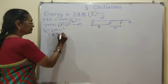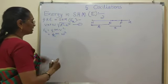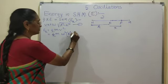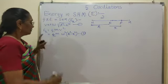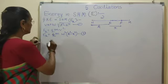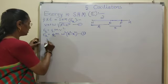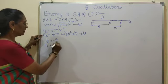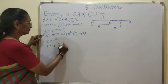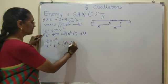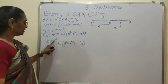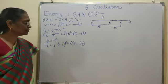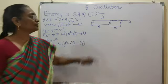Substituting for the velocity, V squared equals omega squared times (A squared minus X squared). So EK equals half M omega squared (A squared minus X squared). This is equation 2. It can also be written as: since K upon M equals omega squared, equation 2 becomes EK equals half K (A squared minus X squared). This is equation 3. So M omega squared can be substituted as K.